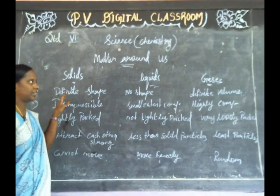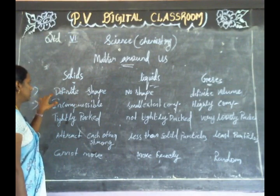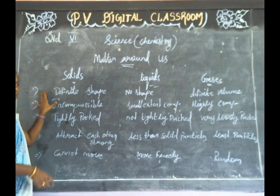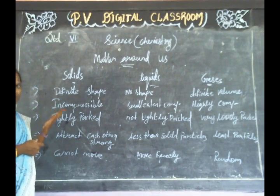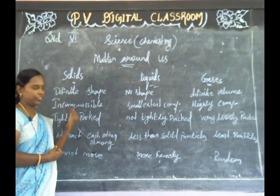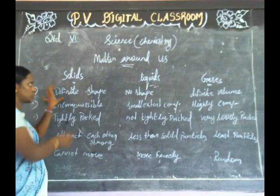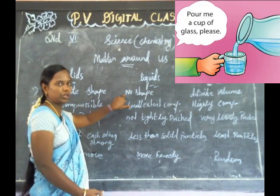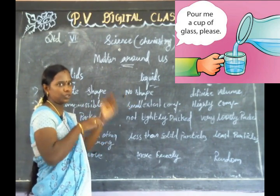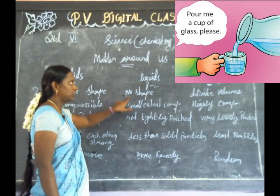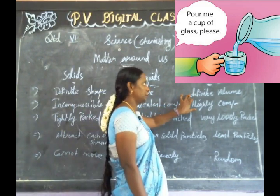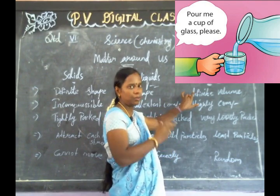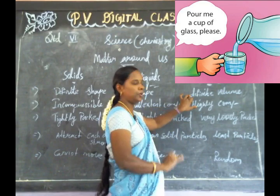Next, solid, liquid, and gases — that is our conclusion. First point: solid has a definite shape. Liquid has no shape. And gases — definite volume is made of the shape of the container. If we use gases, they will fill the drum they are placed in.